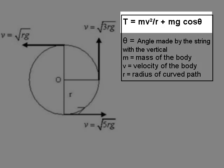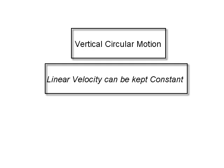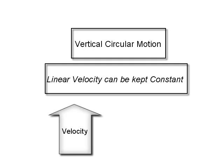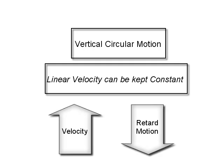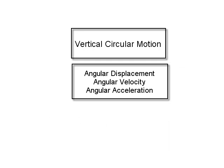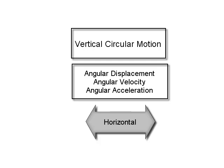This is how vertical circular motion can be analyzed. In vertical circular motion, the linear velocity can be forcefully kept constant, but for that you have to increase the velocity when the body is moving up and retard it when coming down. When the body is moving in the vertical plane, its linear velocity is in the vertical plane, but the angular displacement, angular velocity, and angular acceleration are all perpendicular to the vertical plane, that is they are in the horizontal direction.